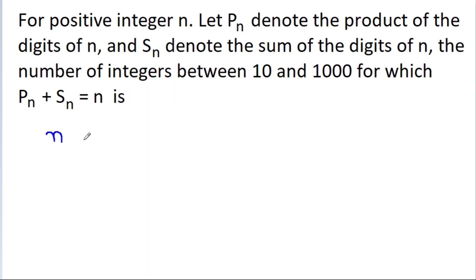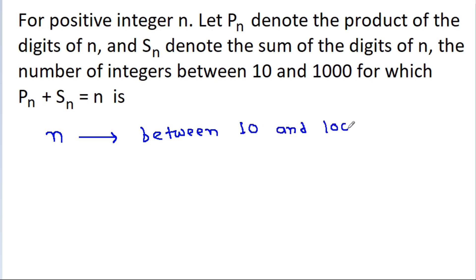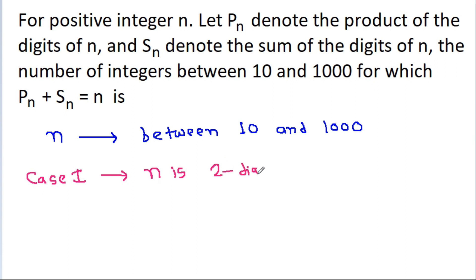We have given n is a positive integer between 10 and 1000. There are two possible cases. Case 1: if n is a 2-digit integer.